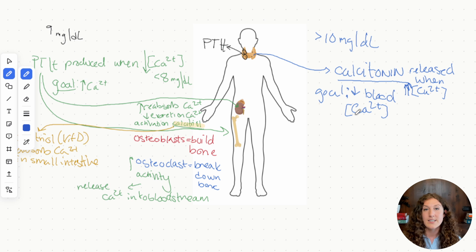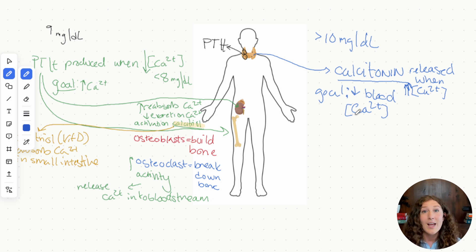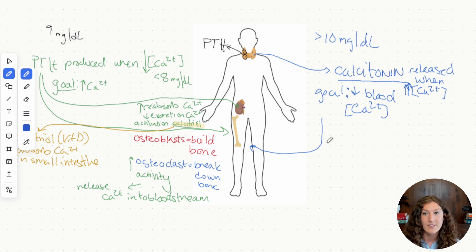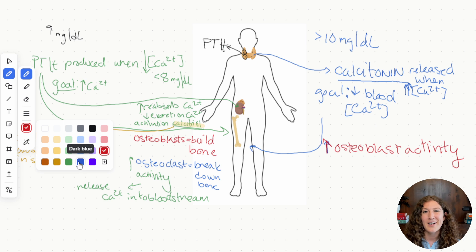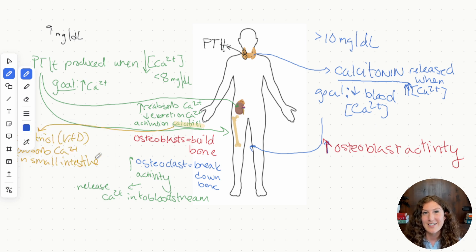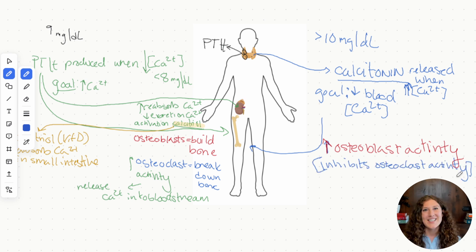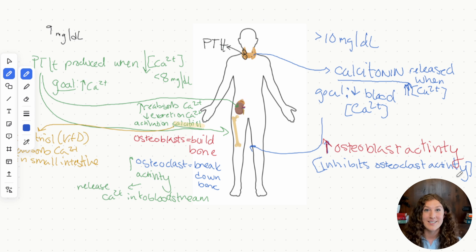Calcitonin is released when Ca2+ levels are too high, and its goal is to decrease blood calcium levels. It's important to keep track: what's the instigator, and what's the goal — that's where feedback mechanisms can get confusing. Calcitonin acts on bones in a way opposite to PTH: instead of stimulating osteoclast activity, it increases osteoblast activity, resulting in more bone deposition and more calcium being stored in the bones. Similar to how PTH inhibits osteoblasts indirectly, calcitonin inhibits osteoclast activity — the net result is more bone deposition.